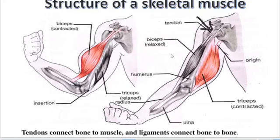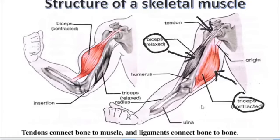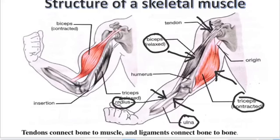We have the muscle here in front, called the bicep muscle, and the muscles at the back called the tricep muscles. When you look at the arm, we have the bone called the ulna bone and another bone called the radius bone. A tendon connects a muscle to a bone, while a ligament connects a bone to another bone.